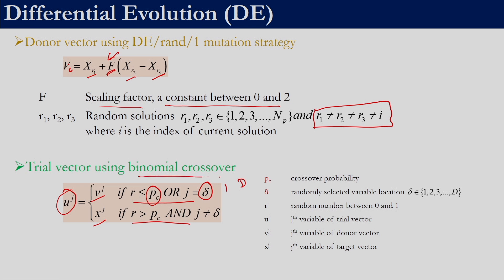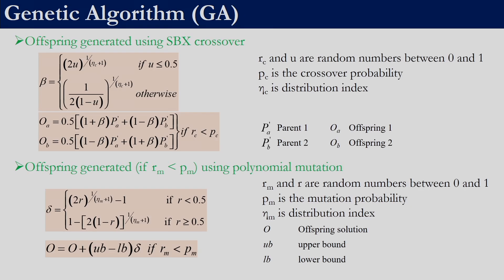In differential evolution this is how we employ variation operators to generate new solutions — here we discussed only binomial crossover; you can look into the previous videos to see the exponential crossover also. In genetic algorithm we had to generate the parameter beta for every decision variable, so as many decision variables as there are, that many random numbers we need to generate between 0 and 1. If the random number is less than or equal to 0.5 we update beta using the first equation, where eta_c is a user-defined parameter.